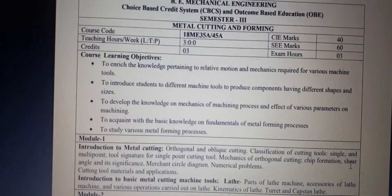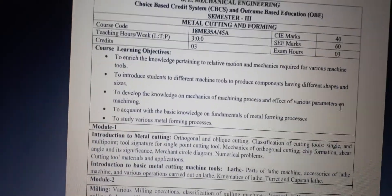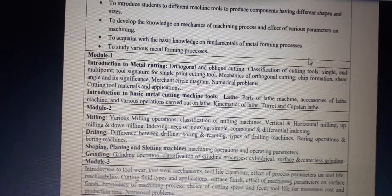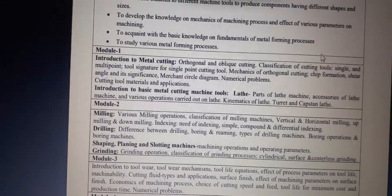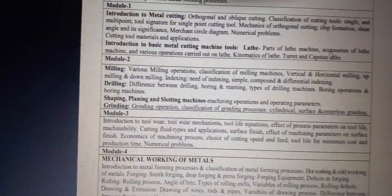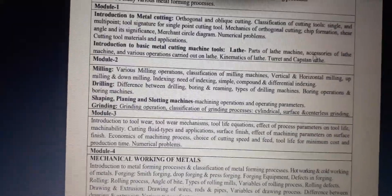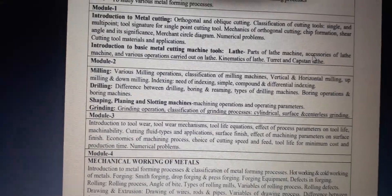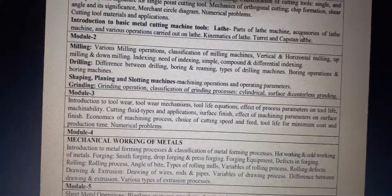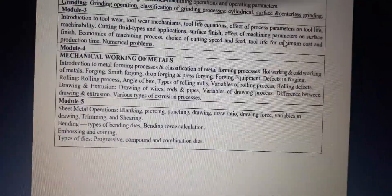I am showing you the syllabus so you know the contents. Module one is introduction to metal cutting. Module two is milling, drilling, shaping, planing, slotting machines, and grinding. Module three covers tool wear mechanisms, tool life, and precautions for tool use. Module four covers mechanical working of metals, and module five covers sheet metal drawing, trimming, and shearing.